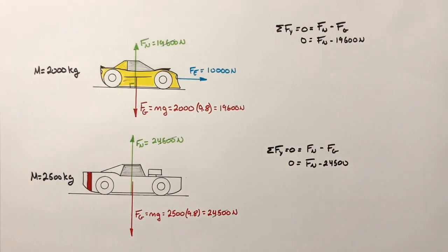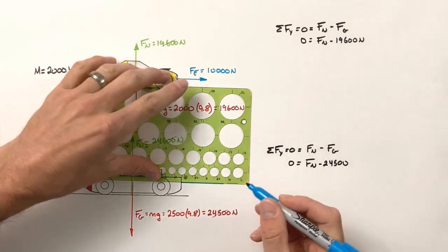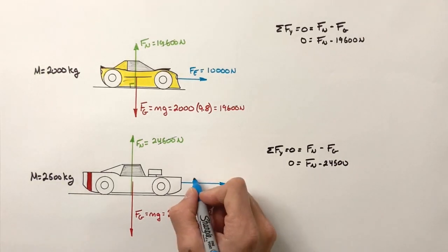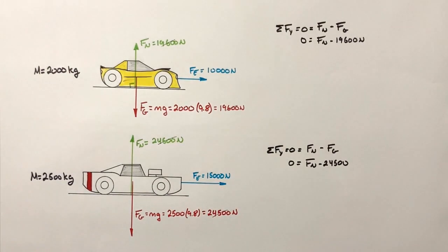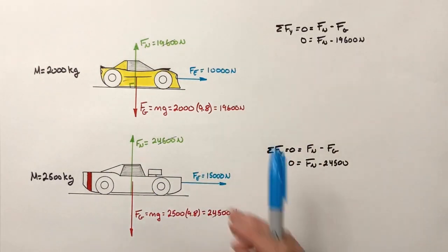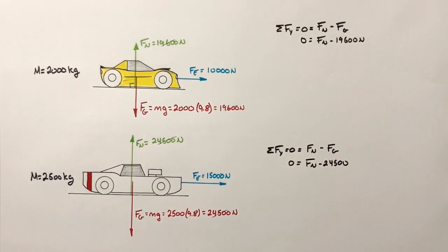Lastly, there's the force forward by this big car, which has a great big engine. It's producing 15,000 newtons of force forward. So we've drawn a free body diagram for each vehicle showing the three forces acting on each car. You might be wondering about friction — how does friction play into this? That's something we'll deal with later. Right now we're just keeping this simple and looking at just a few forces at a time. We'll complicate this later.